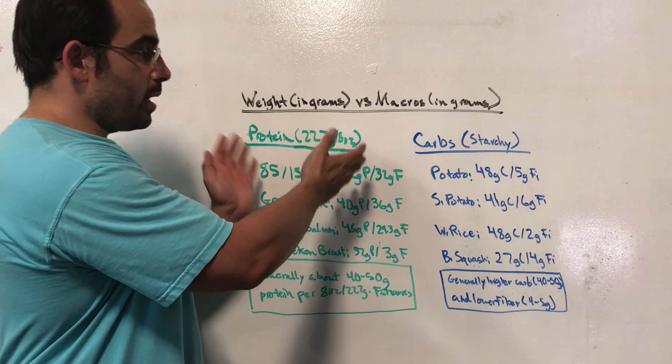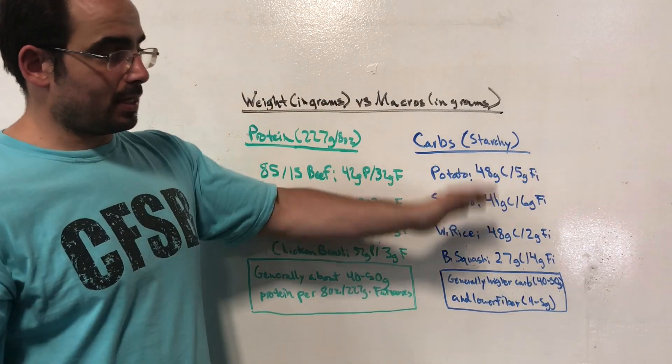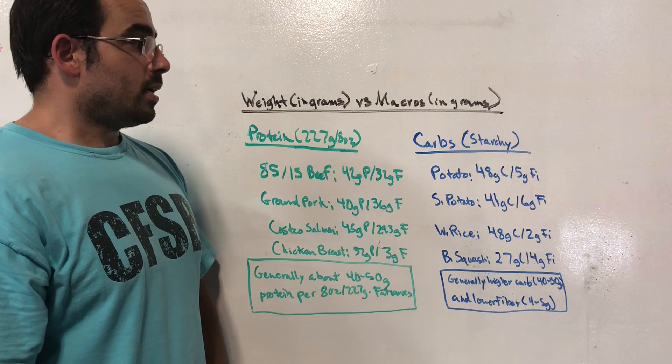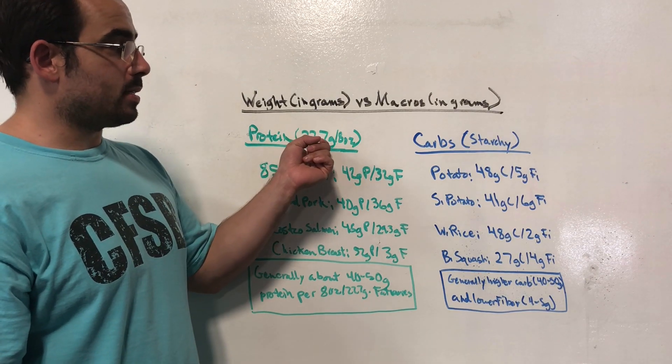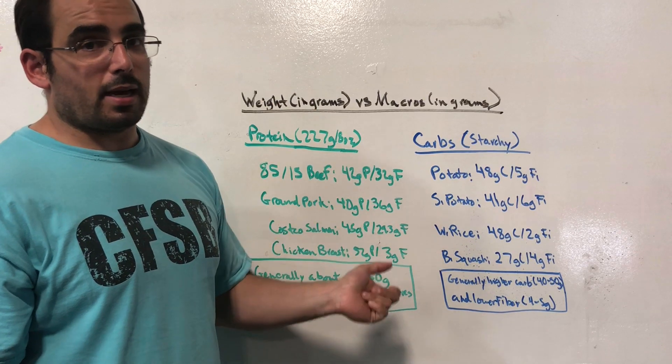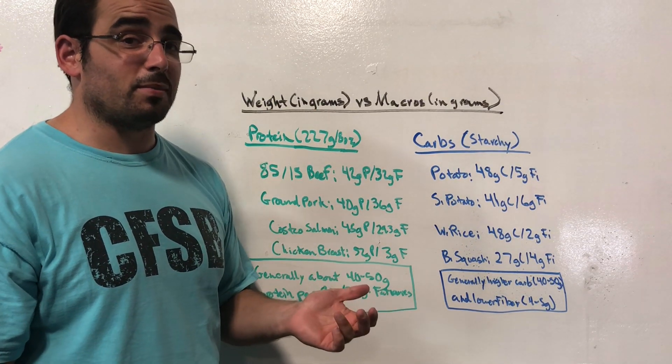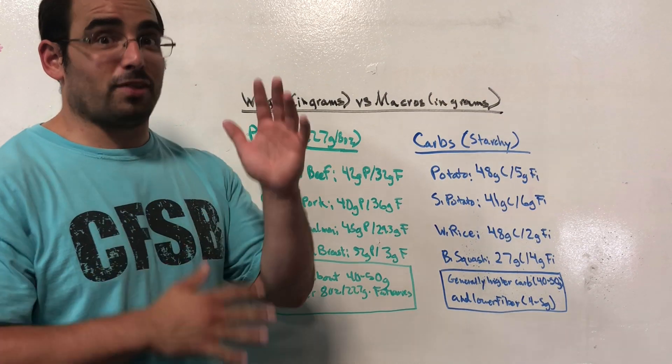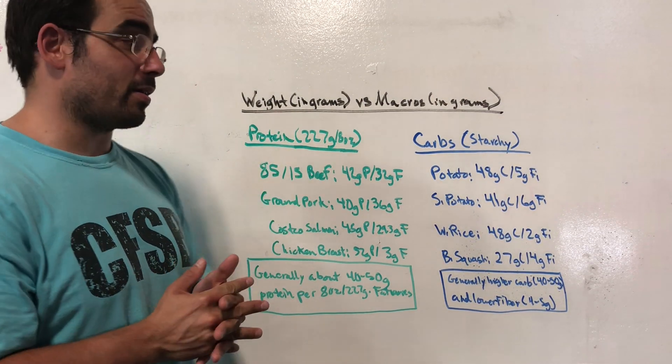So again, the weight of the food is not the same as the amount of carbs or fiber in the food. If you put eight ounces or 227 grams of a potato on a scale and you thought that was 227 grams of carbs, things would be significantly messed up in terms of your macro calculation.